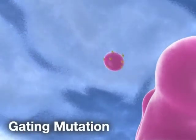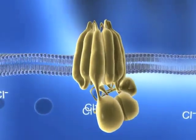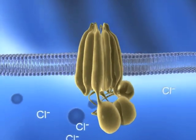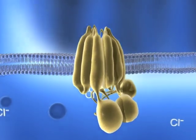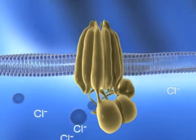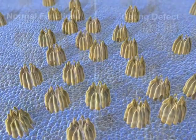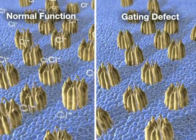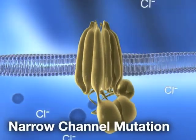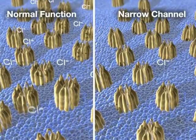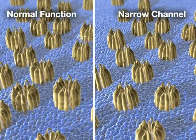Other mutations result in CFTR protein that reaches the apical membrane; however, the channel does not open properly, which is known as a gating defect. Or it has impaired chloride movement, known as a conductance defect. This results in diminished chloride transport across the cell membrane.